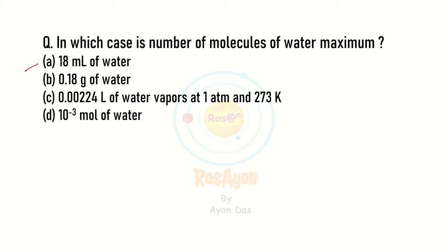If you see the first option which contains 18 mL of water, the volume of water is given but the STP condition is not mentioned here. That means we can't apply the formula volume divided by 22.4 liters. So how do we determine the number of molecules?